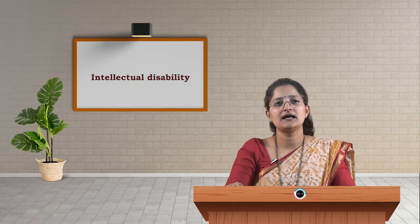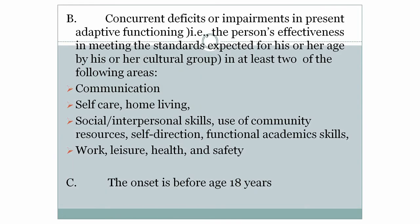Criteria B states that there must be concurrent deficits or impairments in present adaptive functioning — that is, the person's effectiveness in meeting expected standards for their age and cultural group — in at least two of the following areas: communication, self-care, home living, social or interpersonal skills, use of community resources, self-direction, functional academic skills, work, leisure, health, and safety.